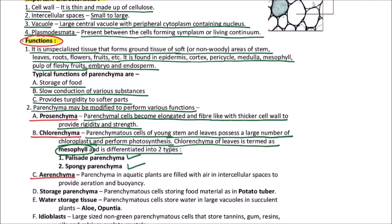Next is aerenchyma. Parenchyma in aquatic plants is filled with air in intercellular spaces to provide aeration and buoyancy. Such type of parenchyma is said to be aerenchyma.